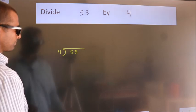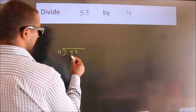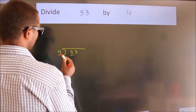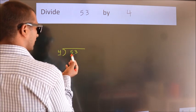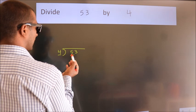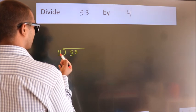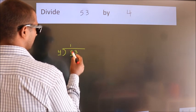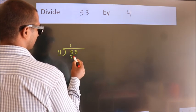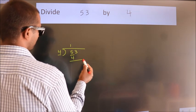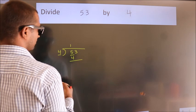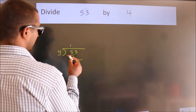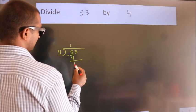Next, here we have 5, here 4. A number close to 5 in the 4 times table is 4 — once 4. Now we should subtract. We get 1.